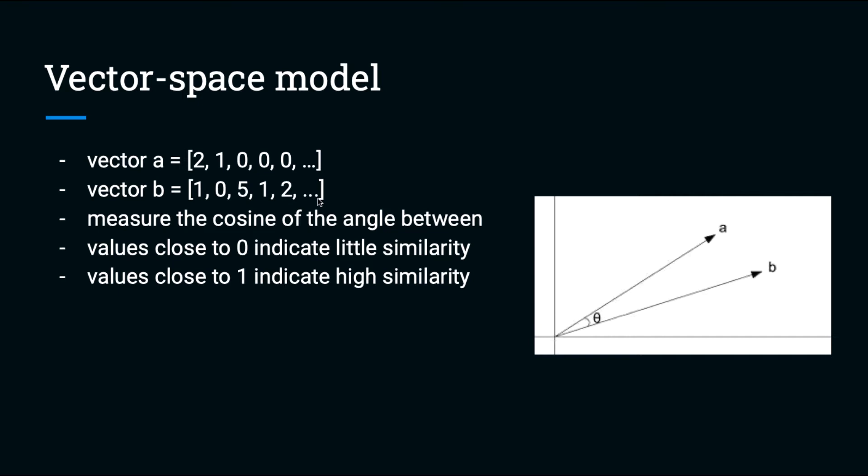In other words, the larger the angle, the less similar, and the smaller the cosine. Conversely, the smaller the angle, the more similar the documents are, and the larger the cosine of the angle.